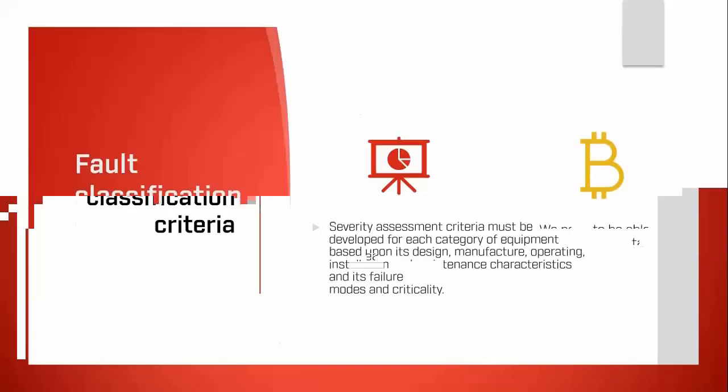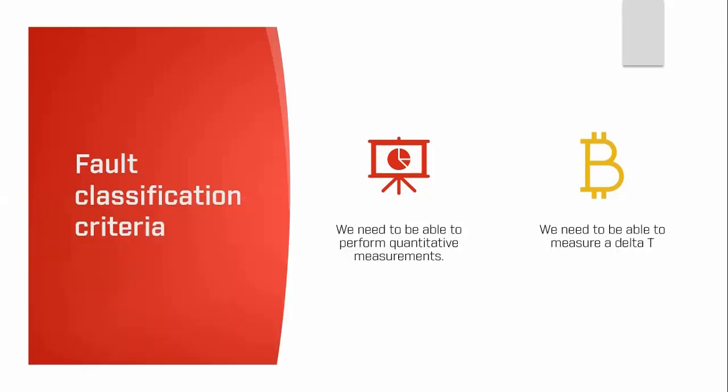To perform full classification criteria, we need to perform two tasks. First, quantitative measurements — set up the camera with correct emissivity, environment, and surface knowledge to take an accurate temperature measurement. Second, we need to do this twice — either at two points on one component, or between one thermal image and another. That measurement is called a delta T, and all full classification criteria is based on a delta T measurement.